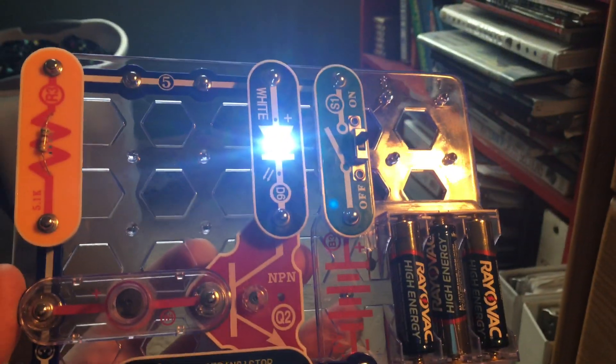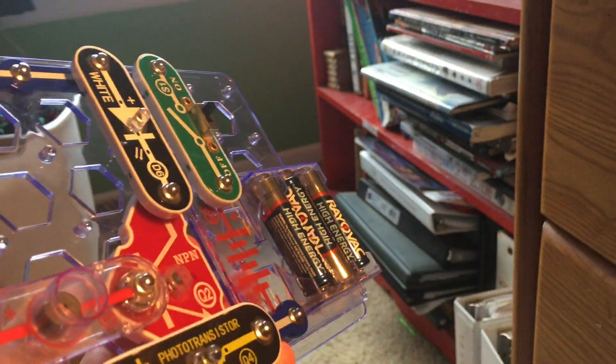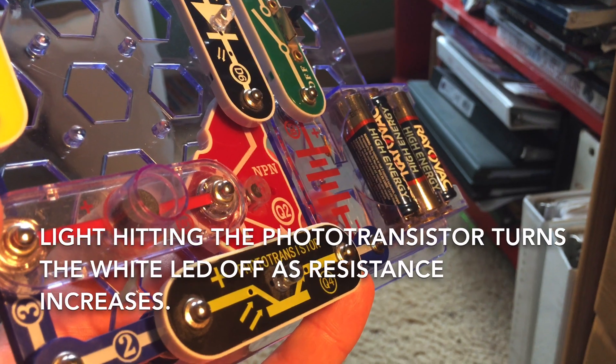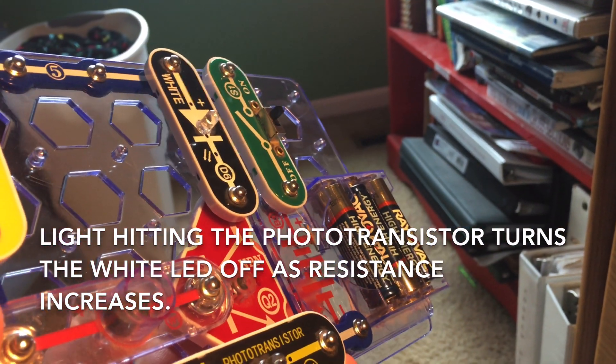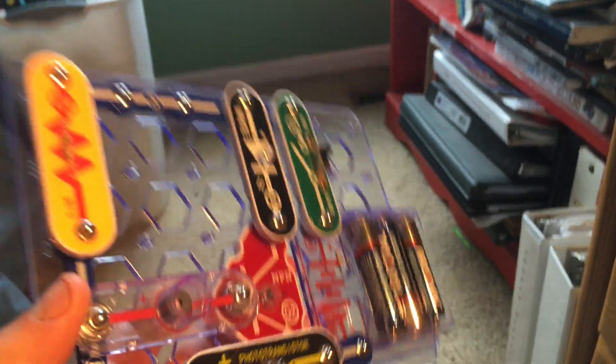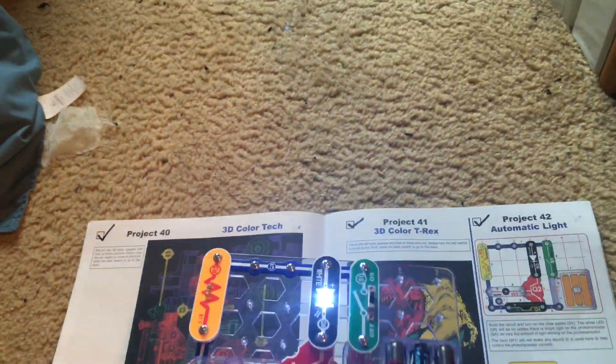When I hold the circuit up to a bright light, my desk lamp, you'll see that the white LED turns off when I hold it at just the right angle. When light hits the phototransistor, the white LED turns off because resistance increases. When light cannot get to the phototransistor, the white LED comes on because resistance decreases.